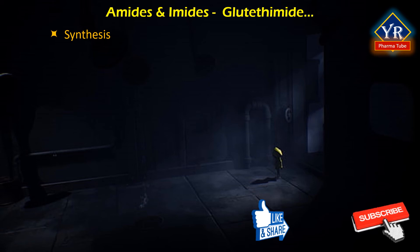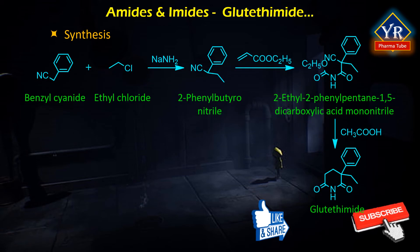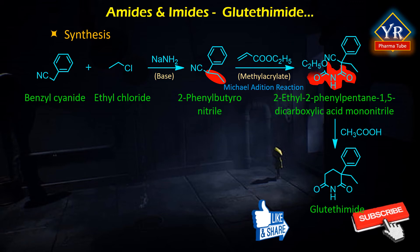Glutethimide is prepared by an alkylation reaction of ethyl chloride and benzoyl cyanide in the presence of a base, forming 2-phenyl-butyronitrile. This product, upon the addition of methyl acrylate, undergoes a Michael addition reaction, producing 2-ethyl-2-phenyl-pentane-1,5-dicarboxylic acid mononitrile. The nitrile group present in this compound is hydrolyzed in the presence of an alkali to an amide group, then upon subsequent reaction with an acid, undergoes cyclization to yield the desired compound glutethimide.